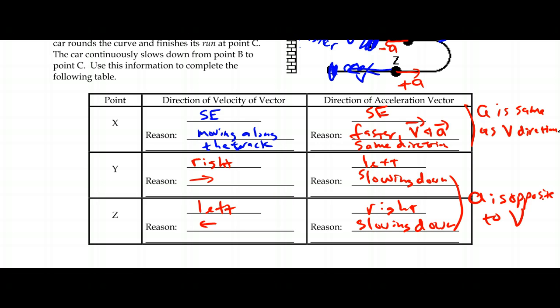If you want to make something go faster, you push it in the direction you want it to go. If it's coming towards you and you want to slow it down, you push against it — against the motion to make it slow down. That's really the forces that cause acceleration. That's why it has to be opposite to slow down and in the same direction to speed up. Acceleration is one of the most challenging topics we tackle — it's not visual, it's more of a feel. It's easy to confuse velocity and acceleration, so don't be surprised if you confuse those two for quite a while. And that's it for this section on acceleration.